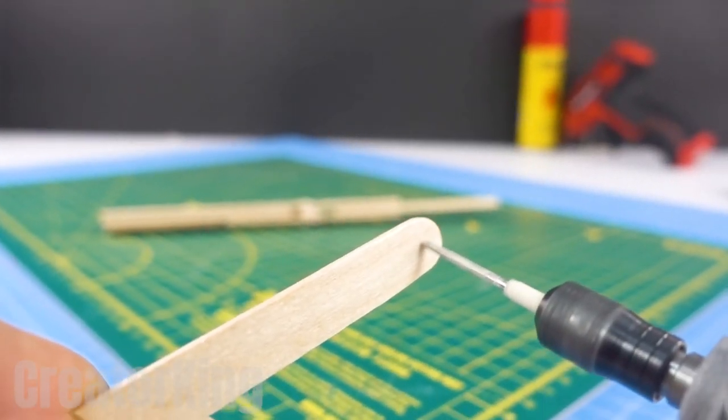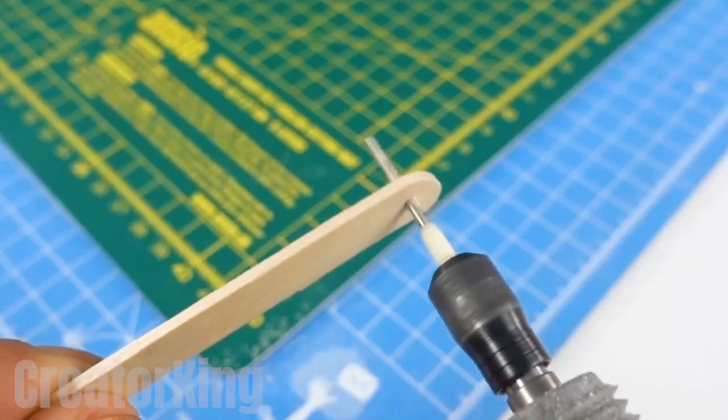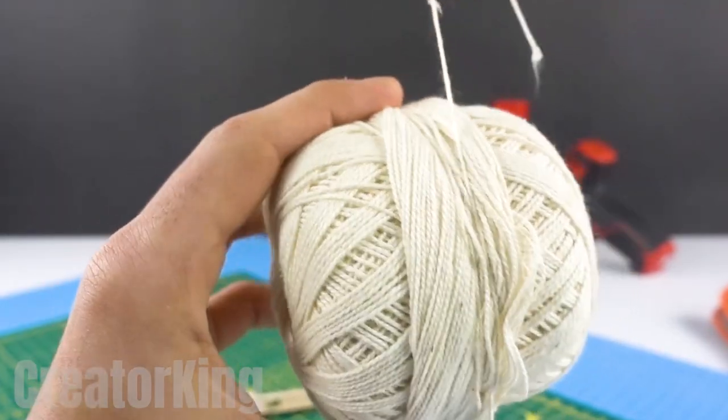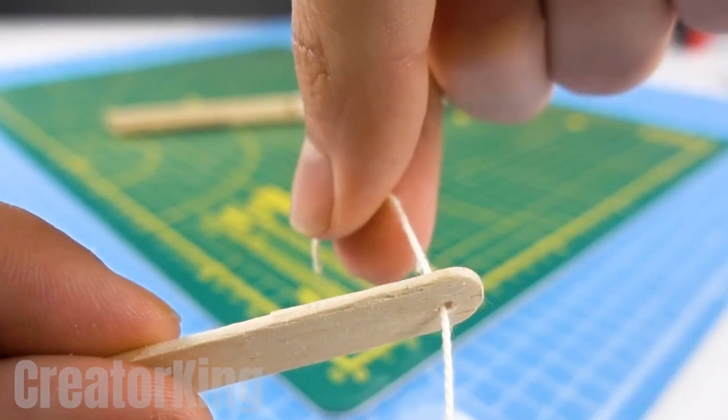We have to make holes on either ends of these sticks that we wrap in rubber bands. And then we'll cut a piece of thread or rope and tie it to each end. We'll tie it at each end with a strong knot.